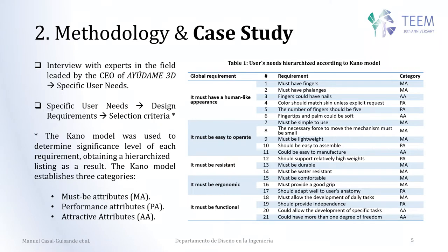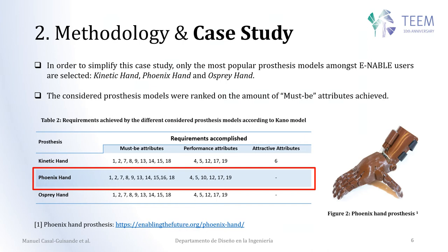These specific user needs were then related to design requirements that were used as selection criteria for the different models. It is important to highlight that we used the Kano model to determine the significance level of each requirement. This model establishes three main categories: must-be attributes, performance attributes, and attractive attributes. The must-be attributes are the most important and are essential for the user. We selected several models available online in the e-NABLE platform — the Kinetic Hand, the Phoenix Hand, and the Unlimbited Hand — and they were ranked using the different must-be attributes each of them meets. In this case, the best one was the Phoenix Hand, which has the greatest number of must-be attributes, and that is the one that is improved.